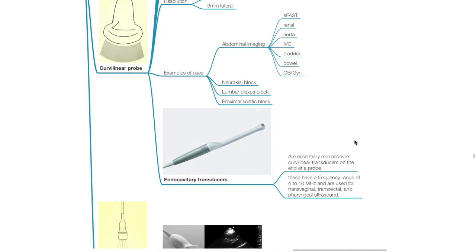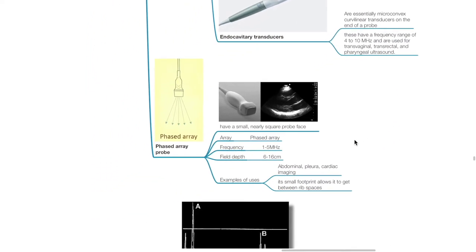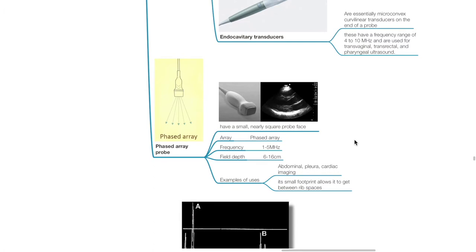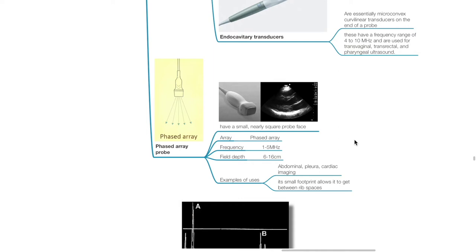Endocavity transducers are essentially microconvex curvilinear transducers on the end of a probe, with a frequency range of 4–10 MHz, used for transvaginal, transrectal, and pharyngeal ultrasound. Phased array probes have a small, nearly square probe face; array is phased array; frequency is 1–5 MHz; field depth is 6–16 cm. Phased array probes are used in abdominal, pleural, and cardiac imaging. Their small footprint allows them to get between rib spaces.